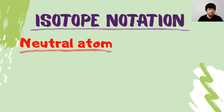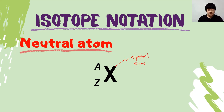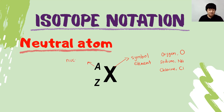Let's look into the isotope notation for a neutral atom. The notation has the form A over Z, X — where X is the symbol of the element. For example, oxygen is O, sodium is Na, chlorine is Cl. A represents the nucleon number of the element, while Z represents the proton number of the element.